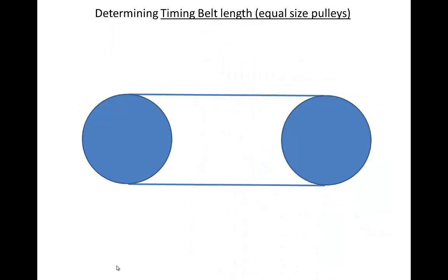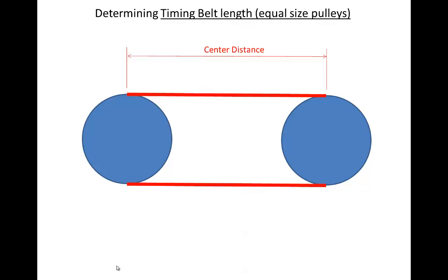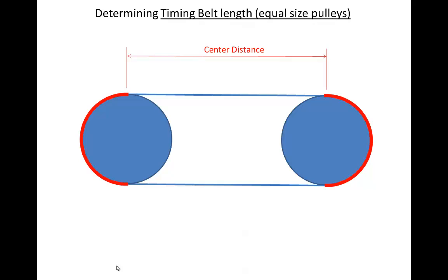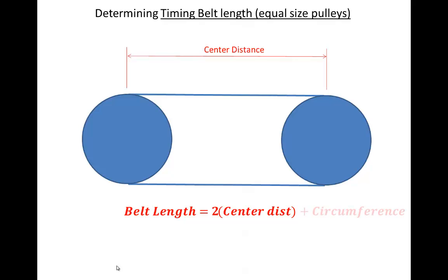Now let's move on to calculating the total length of the timing belt itself. In this first example, we will assume the timing belt connects pulleys of equal size. As a design engineer, we usually have some idea of the center distance we would like between the pulleys. The total length of the belt is made up of two straight sections and two curved sections. I can find the total belt length by taking two center distances and adding two half circles, which equals one full circumference — calculated either by pitch times number of teeth, or pi times pitch diameter.